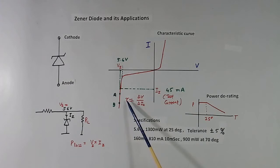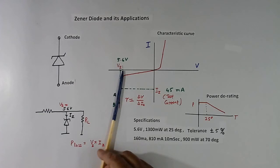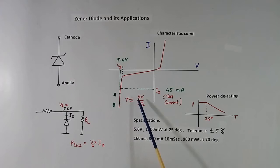Zener diode has one dynamic resistance which is equal to delta V by delta I. Suppose we take two points A and B. This line is not vertical, this has some angle. If delta V is the voltage difference between A and B, and delta I is the difference in the current at point A and B, then ratio of delta V by delta I is called the dynamic resistance. It can be 10 ohm, 20 ohm, 100 ohm or so on.